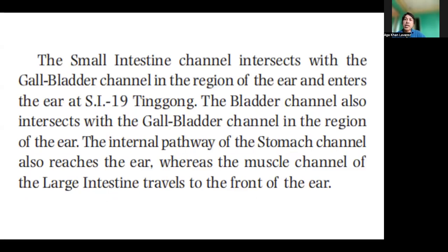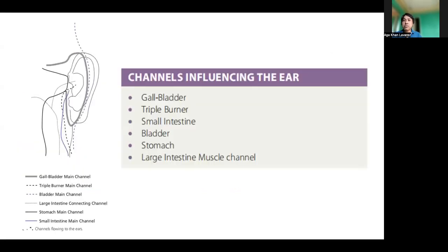The small intestine channel intersects with the gallbladder channel in the region of the ear and enters the ear at SI-19. The bladder channel also intersects with the gallbladder channel in the region of the ear. The internal pathway of the stomach channel also reaches the ear, whereas the muscle channel of the large intestine travels onto the front of the ear. Channels influencing the ear include: gallbladder main channel, triple burner main channel, small intestine, bladder, stomach, and large intestine muscle channel.